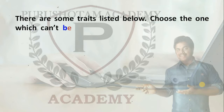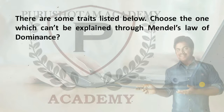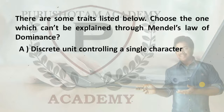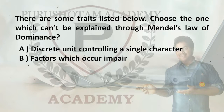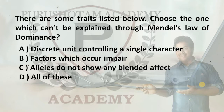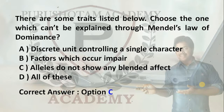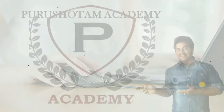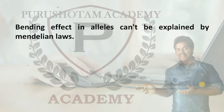First question: there are some traits listed below. Choose the one which can't be explained through Mendel's Law of Dominance. Option A: discrete unit controlling a single character. Option B: factors which occur in pairs. Option C: alleles do not show any blended effect. Option D: all of these. The right answer is Option C — alleles do not show any blended effect. Explanation: blending effect in alleles can't be explained by Mendelian laws.